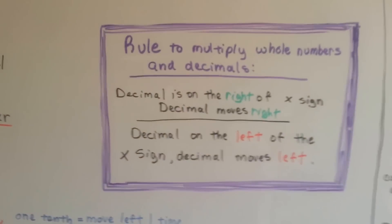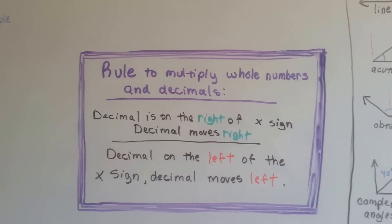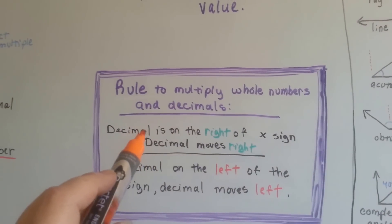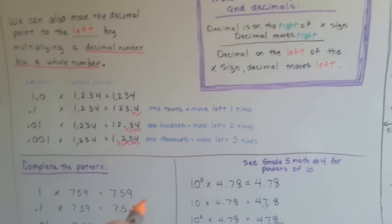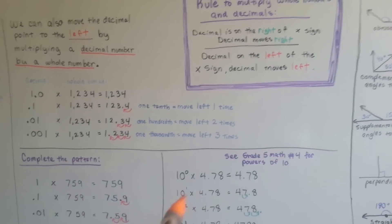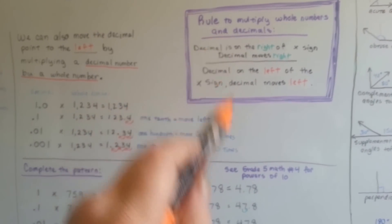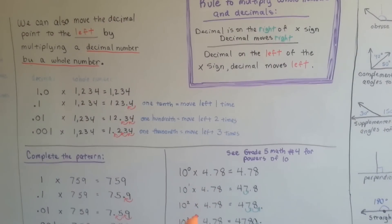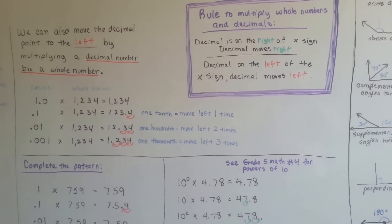Here's a rule to multiply whole numbers and decimals. When the decimal is on the right side of the multiplication sign — like right here, the decimal is on the right side — then the decimal is going to move right.